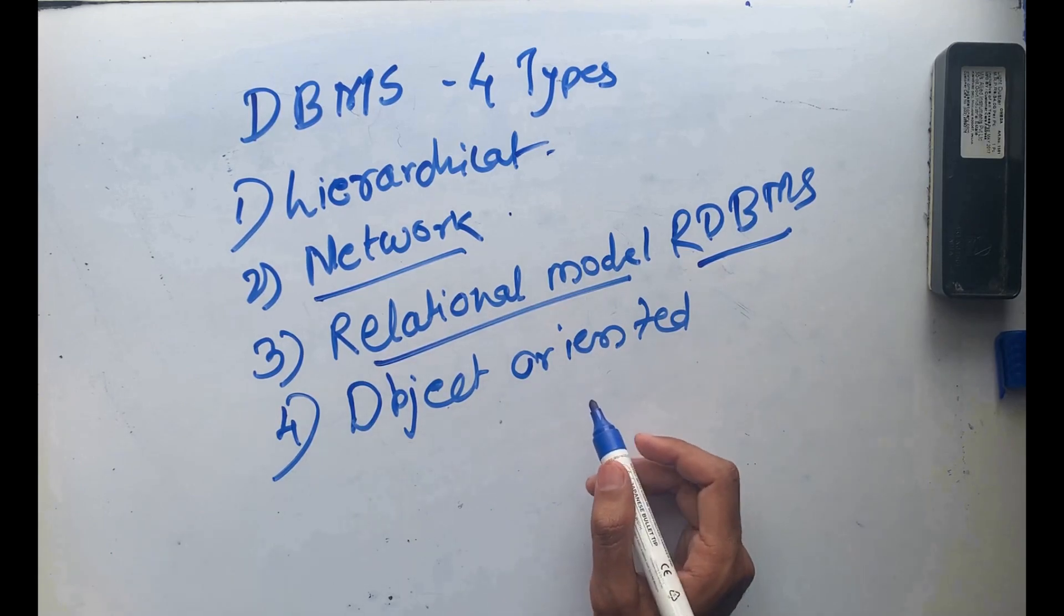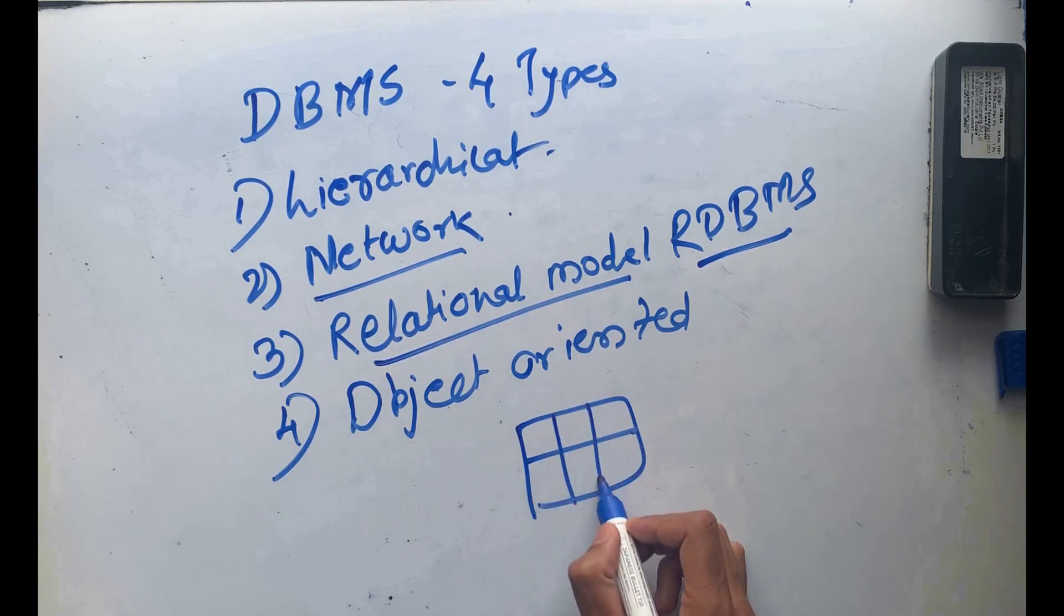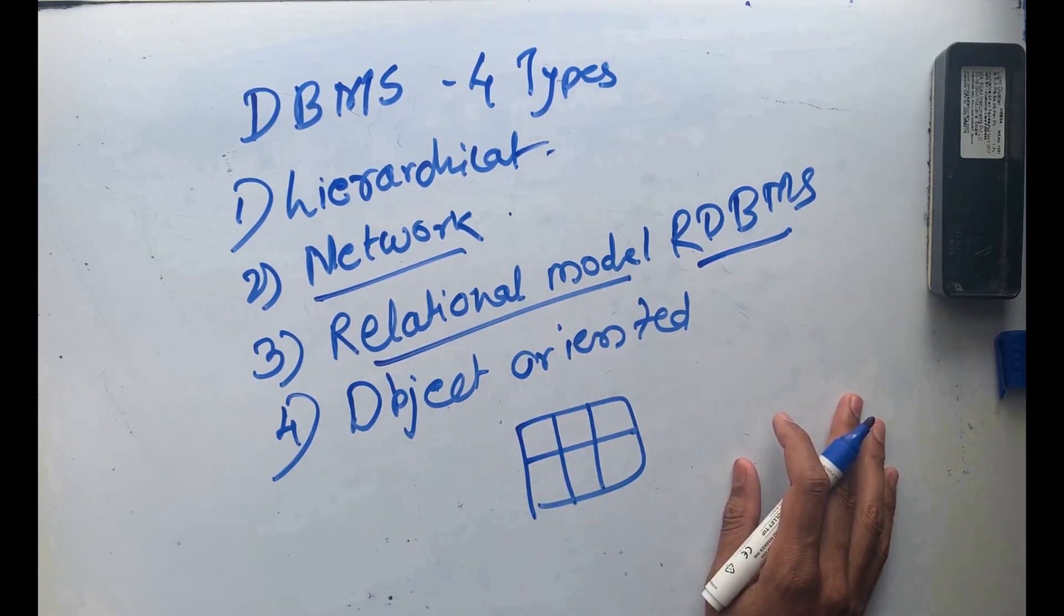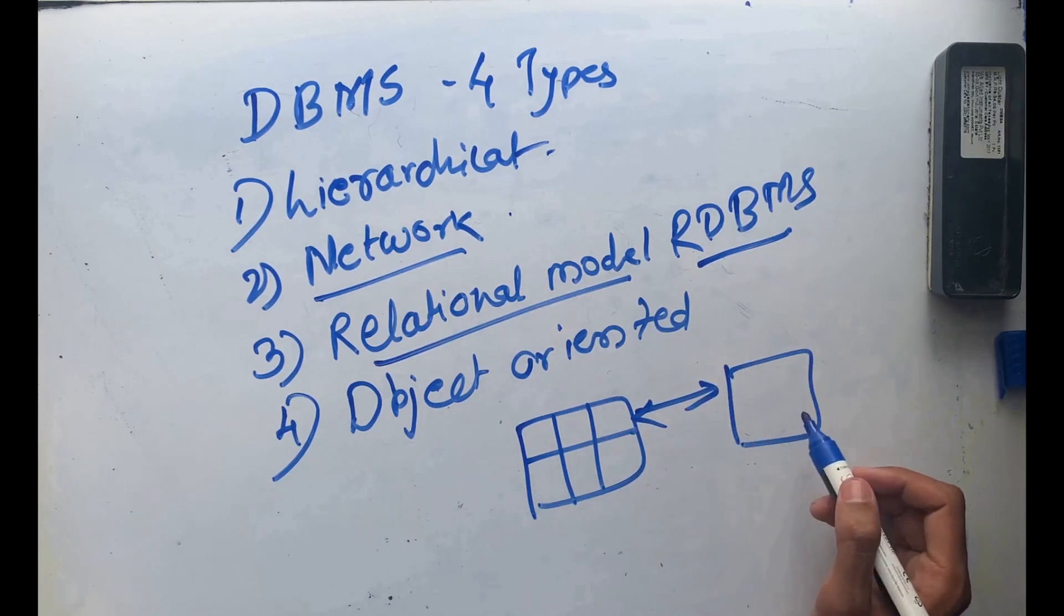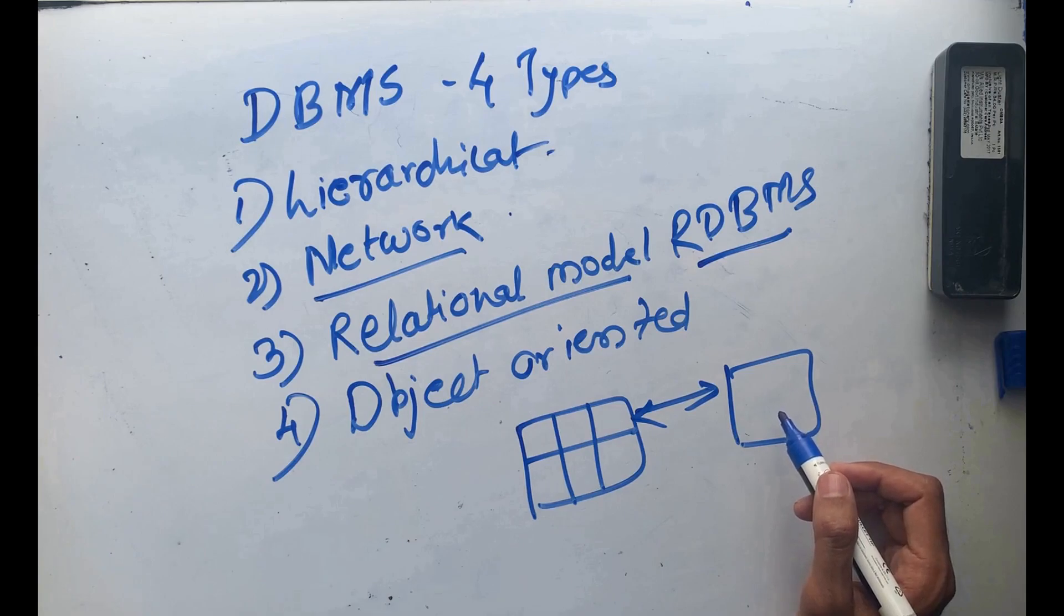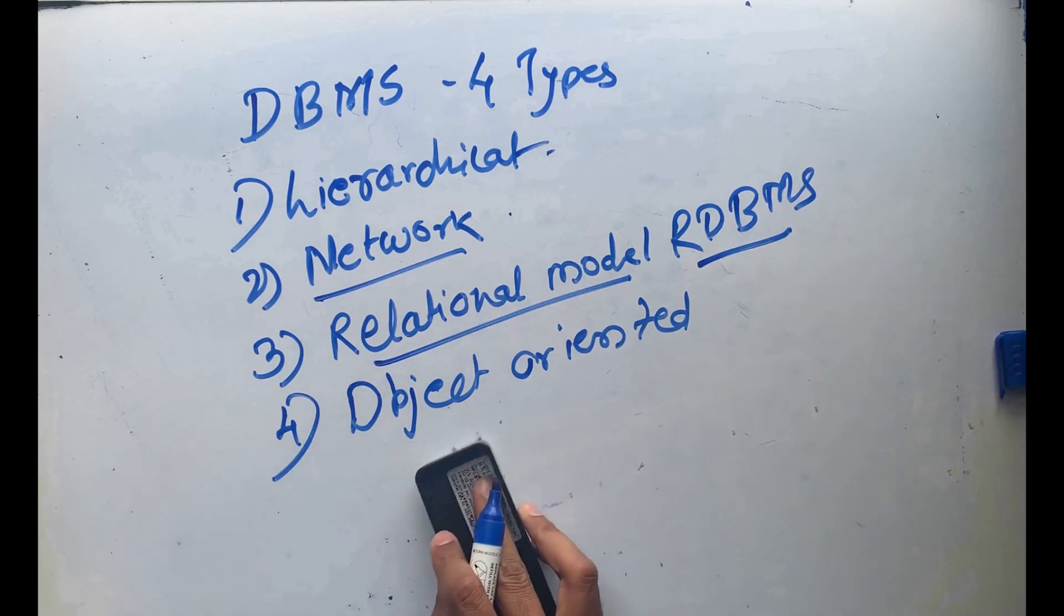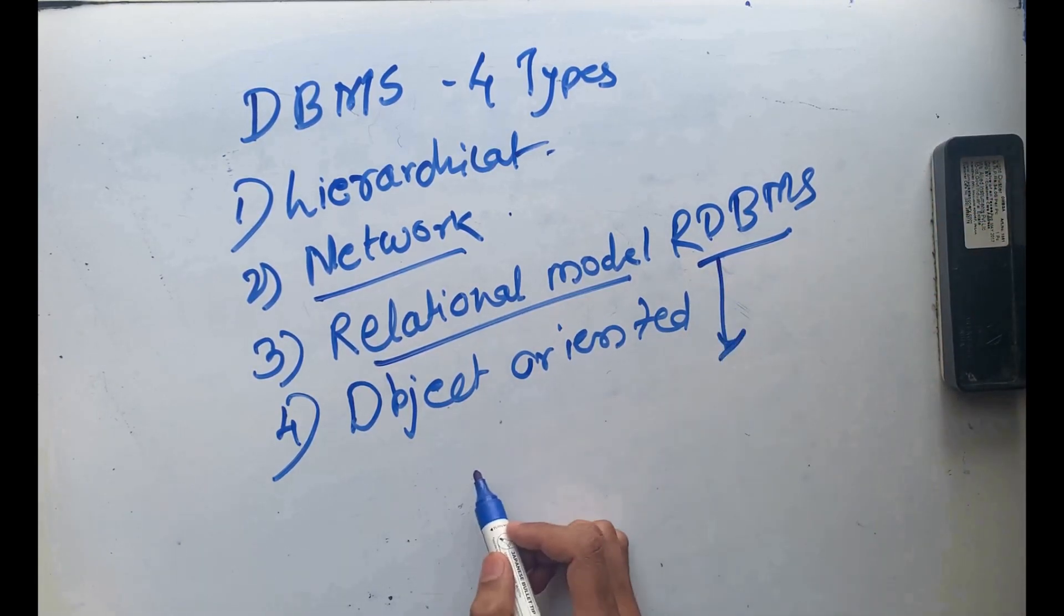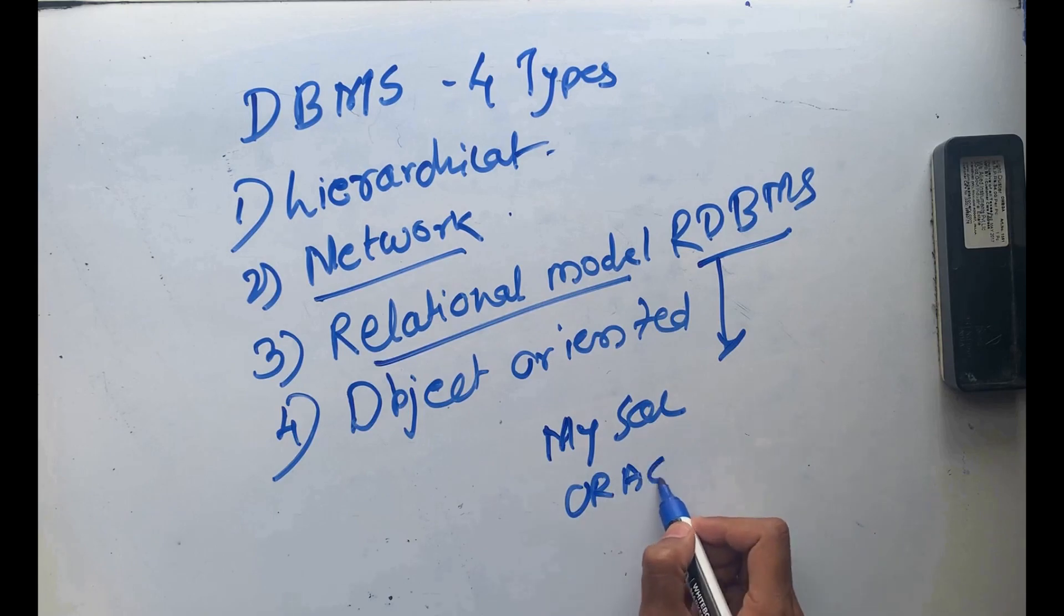As we've seen, there is a table having rows and columns. In that way, the relation happens between the tables and that model is structured. There are different DBMS systems available in the market for relational database management systems, like MySQL, Oracle, Microsoft SQL Server.